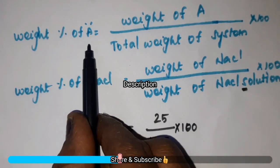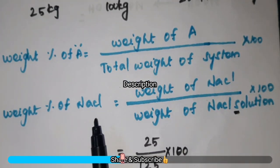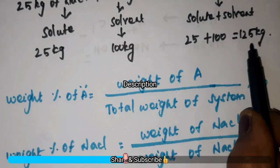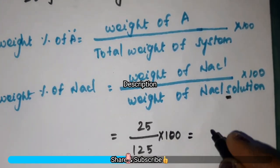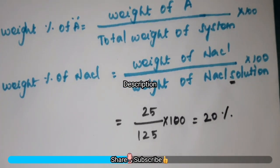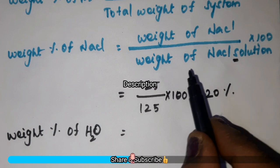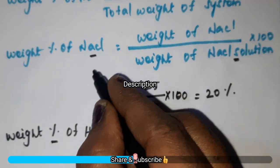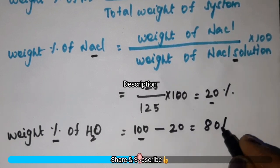The formula to calculate weight percentage of A is weight of the component A divided by total weight of the system into 100. Weight percentage of NaCl is equal to weight of NaCl divided by weight of NaCl solution into 100. Weight of NaCl is 25 kg and weight of the NaCl solution is 125 kg. So 25 divided by 125 into 100 is equal to 20%. For weight percentage of water, there is no need to calculate again — just subtract from 100: 100 minus 20 is equal to 80%.